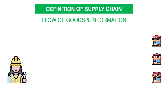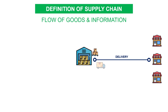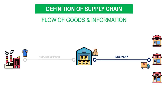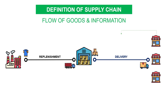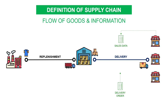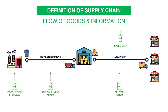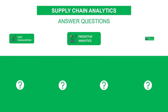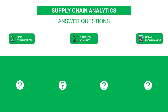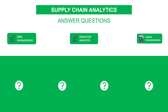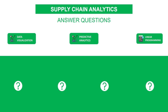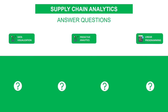There are stores all around the world. Stores are delivered from local warehouses, which are replenished from factories located in Asia. Along the chain, data is created, transmitted, and stored in databases. Supply chain analytics is a set of tools and methodology using these flows of information to answer operational questions.